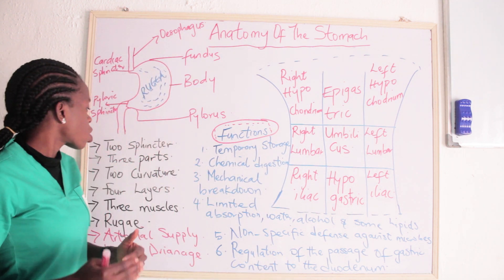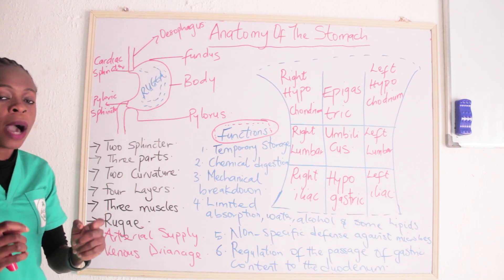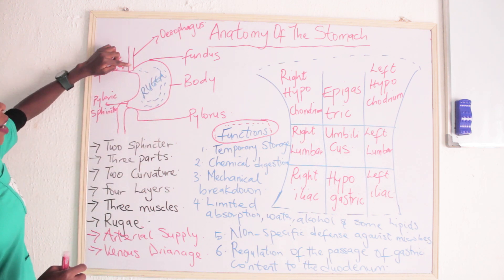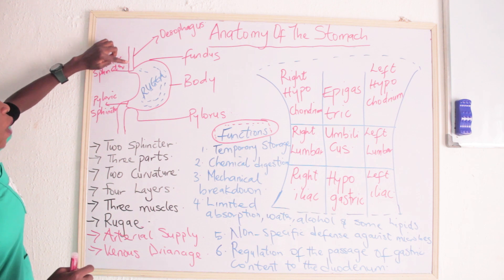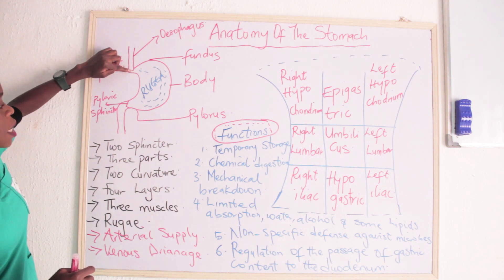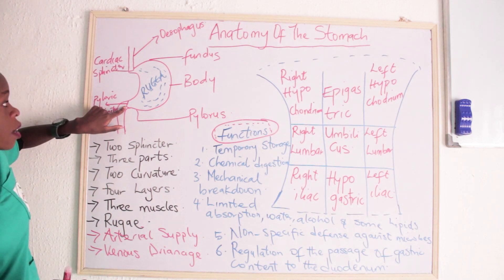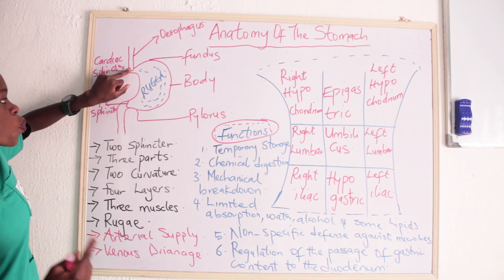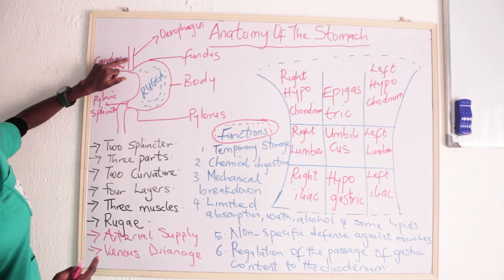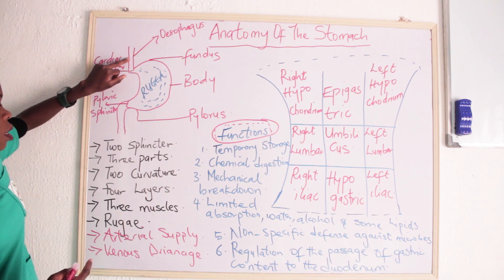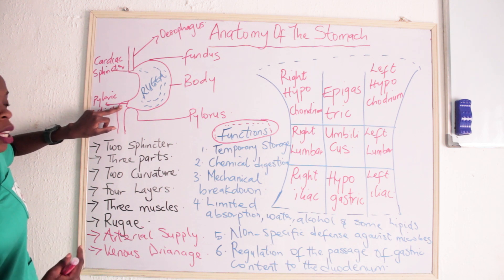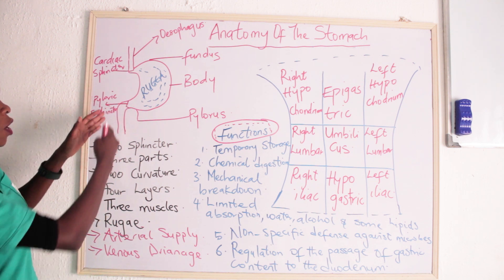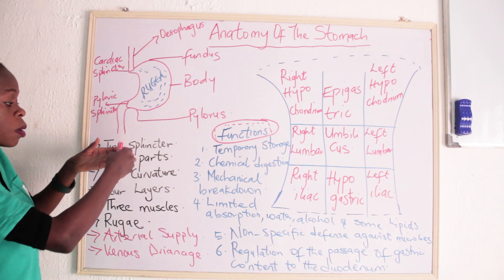Now let's talk about the sphincters of the stomach. There is a sphincter where the esophagus meets the stomach — that is the cardiac sphincter. Then we have the pyloric sphincter where the stomach continues into the duodenum.